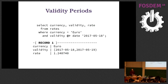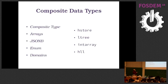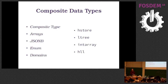Denormalization tools in PostgreSQL include many data types: composite types, arrays, JSONB — spelled with a B at the end, so just remember that. Also domains, and extensions like hstore, ltree, intarray, and hll. If you don't know about them, there was a talk this morning from Craig covering most of them. Now that you know the names, you can find documentation easily.